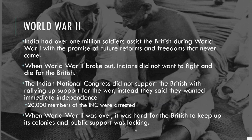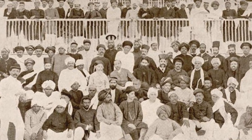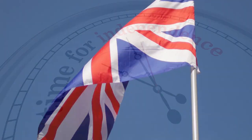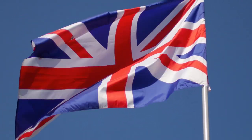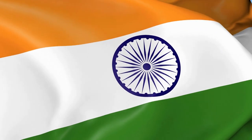World War II then broke out. India had sent one million soldiers to assist the British during World War I with the promise of future reforms and freedoms, but in World War II they were not going to do it. Indians did not want to fight and die for the British. The Indian National Congress did not support the British war effort; instead, they demanded immediate independence. The British response was to arrest 20,000 members of the INC — essentially the entire organization. When World War II ended, India was firmly demanding independence. The British no longer had the finances, the arms, or the public support to keep up their colonies. The Quit India movement was simply too strong, and finally the British began going through the process to grant India its independence, working with various leaders like Jinnah and Nehru.